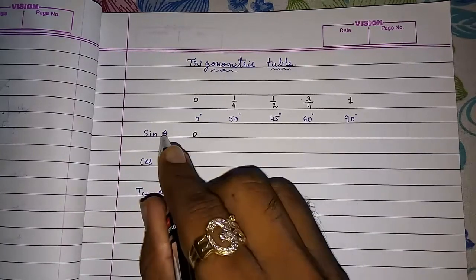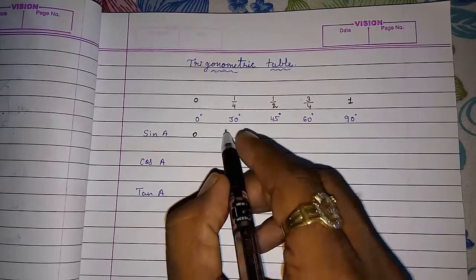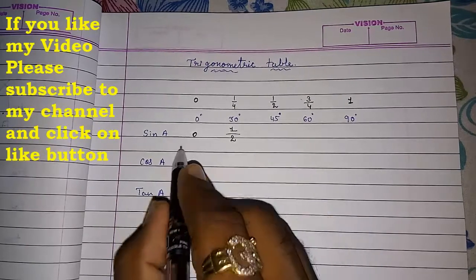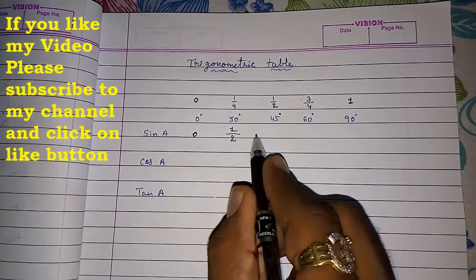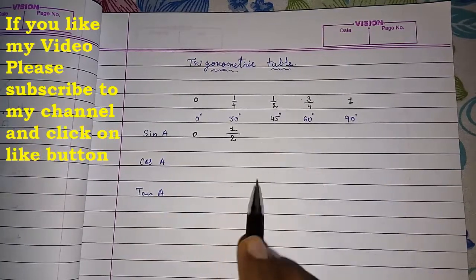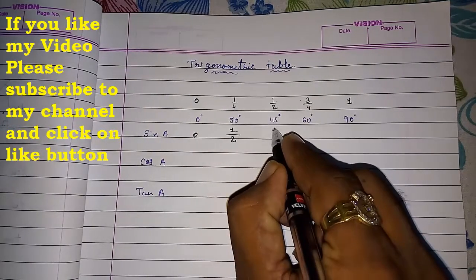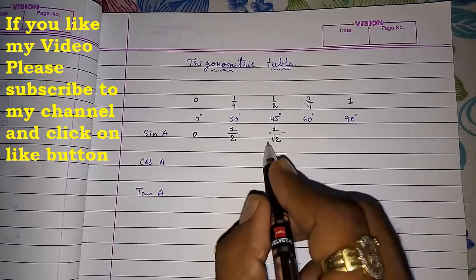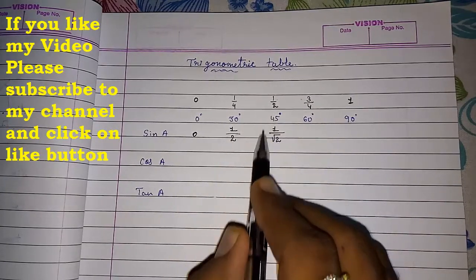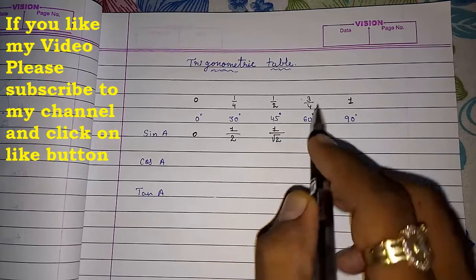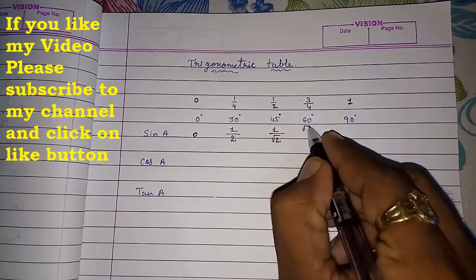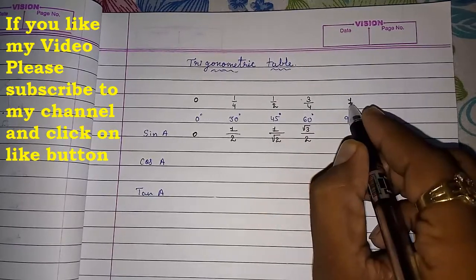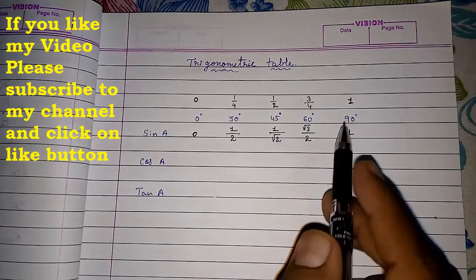Next, the square root of 1/4: root of 1 is 1 and root of 4 is 2, so sine 30° = 1/2. For 45°, we have 1/2 under the root: root of 1 is 1 but root of 2 is not a perfect square, so we keep it as 1/√2. For 60°, root of 3/4 gives √3/2. For 90°, root of 1 = 1.